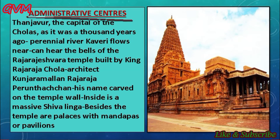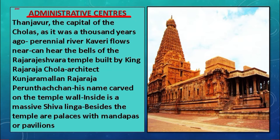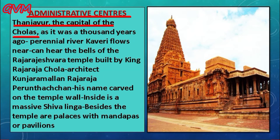The first type is administrative centers. Thanjavur was the capital of the Cholas, situated on the bank of the river Kaveri in Tamil Nadu. A thousand years ago, during the medieval period, Thanjavur was a busy commercial town with markets for grains, spices, clothes and jewelry. Water was supplied to its people and visitors from big wells and tanks.